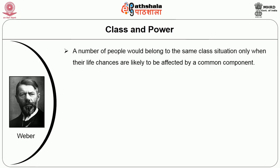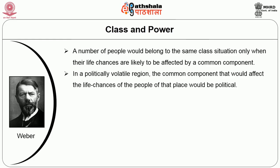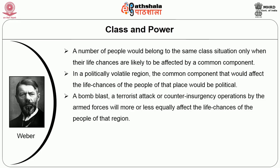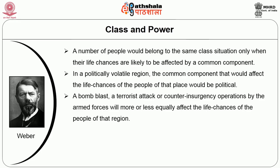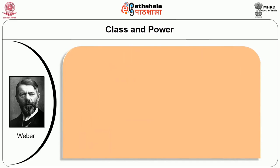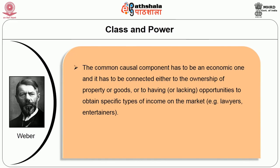A number of people belong to the same class situation only when life chances are affected by a common component. For example, in a politically volatile region, the common component affecting life chances would be political — a bomb blast or terrorist attack. However, if the common causal component is political, that group cannot be called a class. The second important point: the common causal component must be economic — connected to ownership of property or goods, or opportunities to obtain specific types of income on the market, such as for lawyers and entertainers.